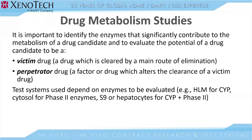Now the test systems that you choose to use in these studies depend upon the enzymes that are going to be evaluated. For example, for CYP enzymes, we would choose human liver microsomes. Cytosol would be used for phase two enzymes, or S9 or hepatocytes can be used when investigating both CYP and phase two enzymes.